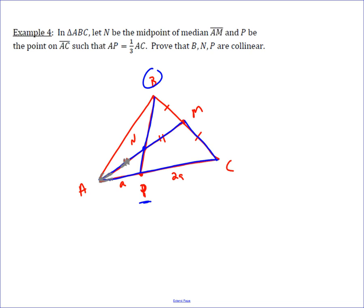Menelaus's theorem works in a clockwise fashion. Starting at A, we have AN over NM. Then moving to M, we have MB over BC, since M and C are vertices. Then times CP over AP.